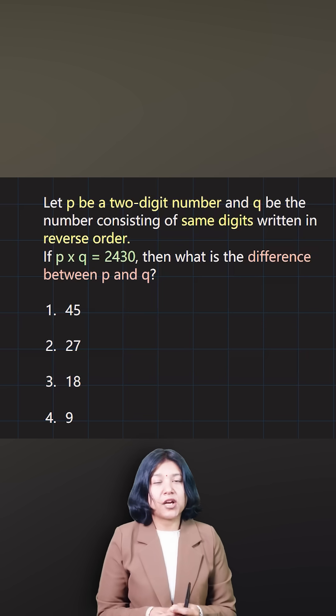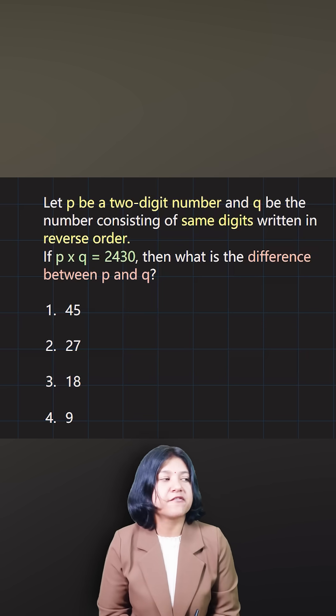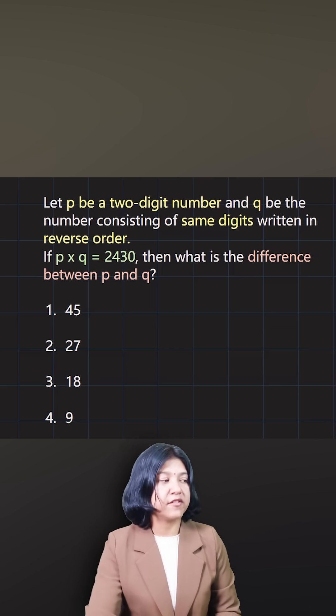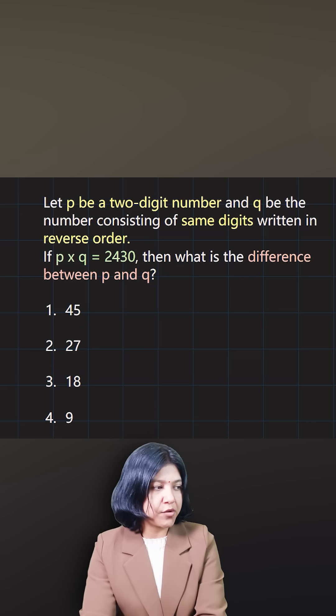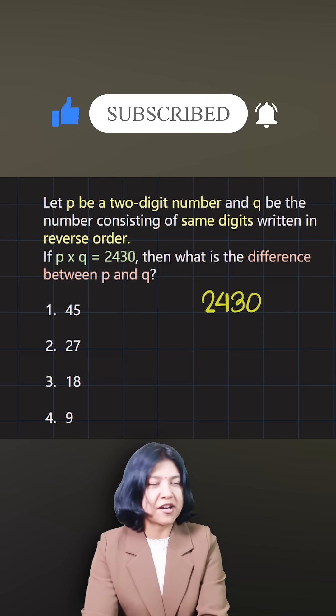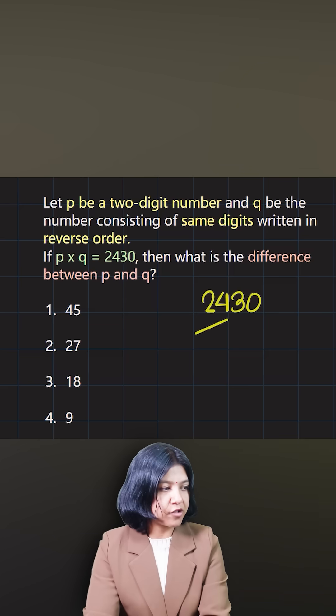You have a two-digit number and you have another number that is obtained by reversing the digits of the original number. Now their product has been given to you: 2430. So when you know the product of two numbers, the first thing that should come to your mind is their factorization.